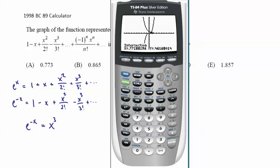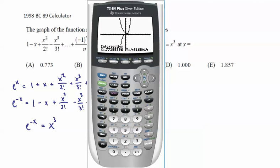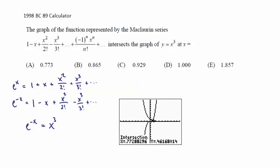Now we have to check to see whether we're looking for the x value or the y value. We're looking for the x value, so that would be 0.773. So I'll place a copy of that on the screen there, and the answer for that would simply be A.